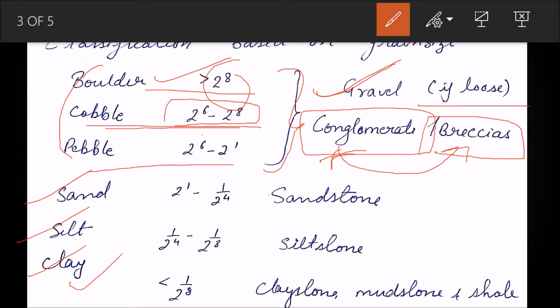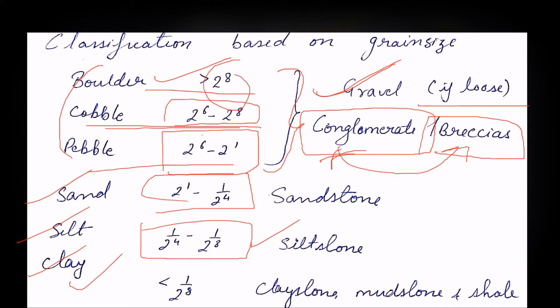Pebble is 2 to the power 6 to 2 to the power 1. Sand is 2 to the power 1 to 1 upon 2 to the power 4. And 1 upon 2 to the power 2 to 1 upon 2 to the power 8 is siltstone. These are the basics of grain size, and on this basis we classify the rocks.